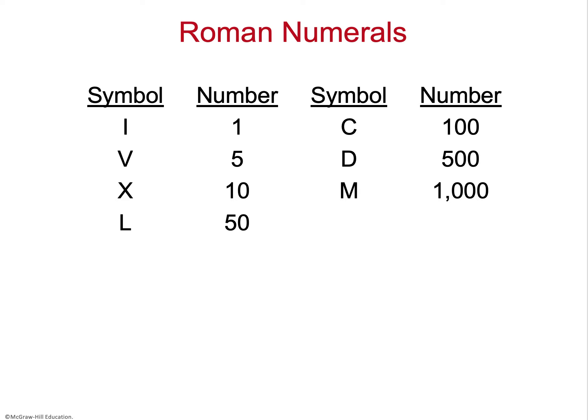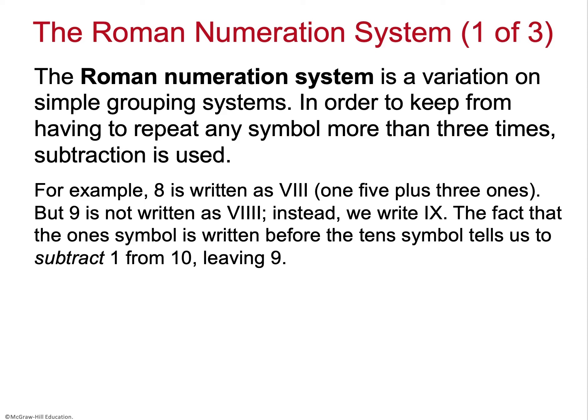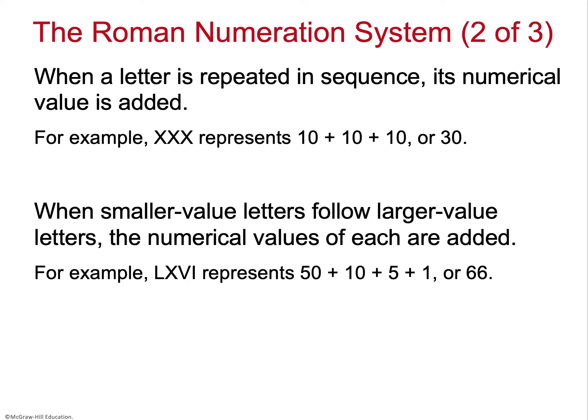Roman numerals are incredibly popular and most of us are familiar with them on some level. The Roman numeral system is a variation of a grouping system — slightly more condensed than hieroglyphics — and it helps us avoid repeating any symbol more than three times. For example, 8 is written as VIII (5 plus three 1s), but 9 is written as IX, meaning 10 minus 1. It's worth a quick search if you haven't seen this system much.